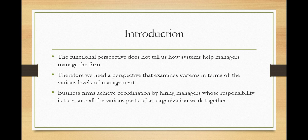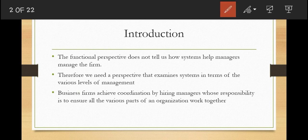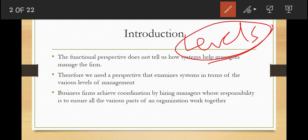It is very important, therefore, to examine systems in terms of various levels of management and the types of decisions that they support. That's why we will be discussing systems in a constituent perspective. The word constituents means levels, so we'll be talking about the types of information systems according to the levels of management.